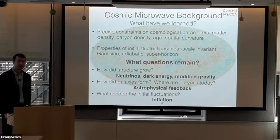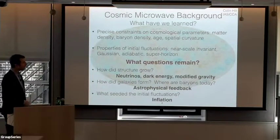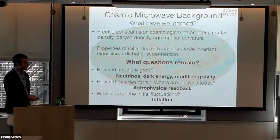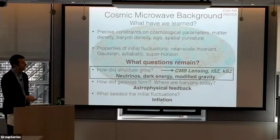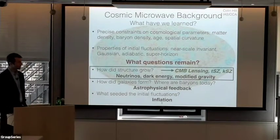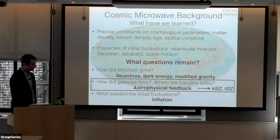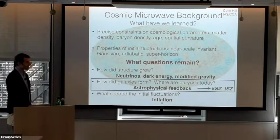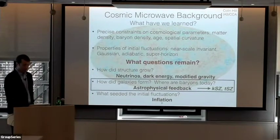Given this tremendous progress, what questions remain? Fortunately there's a lot of really exciting things to do. First, we'd like to probe how structure has grown over the history of the universe — related to the properties of neutrinos, dark energy, and potential modifications of gravity. With the CMB, we can probe this using measurements of gravitational lensing of the CMB, as well as the thermal and kinematic Sunyaev-Zel'dovich effects. Second, we'd like to learn how galaxies formed, which is intimately linked to where baryons are located in the late-time universe and their thermodynamic properties — governed by astrophysical feedback processes.